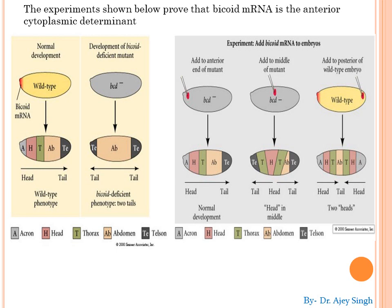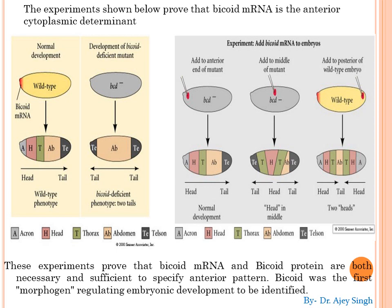दोनों terminal पे telson की वजह से tail का formation होगा। Last experiment में wild type embryo में — जहाँ bicoid anterior side पे है — posterior side पे bicoid को ectopically provide किया गया। तो जहाँ bicoid provide किया वहाँ head और thorax का formation होगा — इस तरीके से anterior end और posterior end दोनों sides पे head का formation दिखाई देगा। These experiments prove that bicoid messenger RNA and bicoid protein are both necessary and sufficient to specify anterior pattern. Bicoid was the first morphogen regulating embryonic development to be identified.